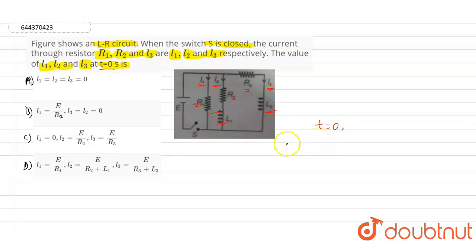That means i2 equals i3, that will be equals to zero, and i1 value will become capital E divided by R1. So this is the correct answer for this question. Out of these four options, if you see option B, i1 equals E divided by R1, and i3 and i2 are equals to zero. This is the correct answer. Thank you.